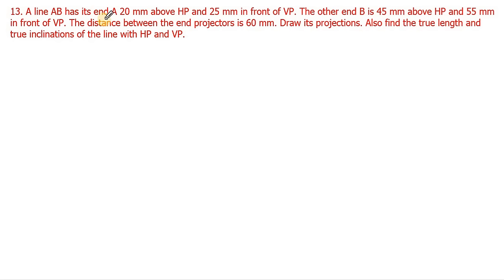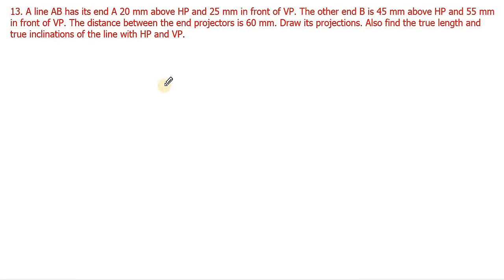The problem: a line AB has its end A 20 mm above HP and 25 mm in front of VP. The other end B is 45 mm above HP and 55 mm in front of VP. The distance between the end projectors is 60 mm. Draw its projections and find the true length and true inclination of the line with HP and VP.